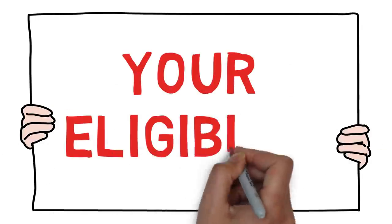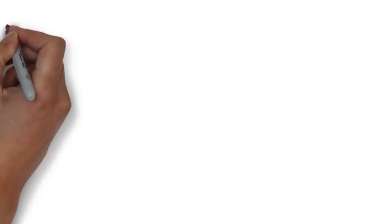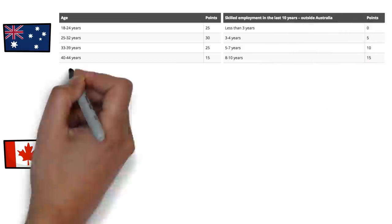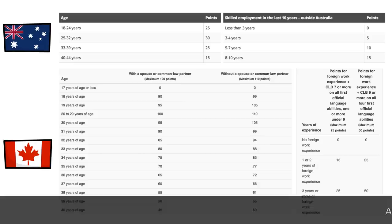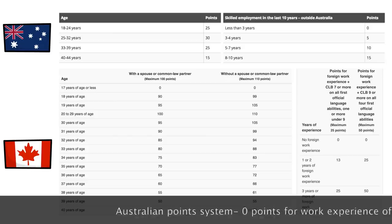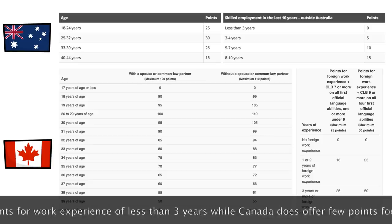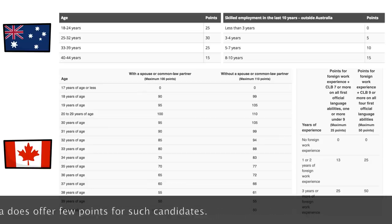Both countries have very similar eligibility criteria based on factors like age, skilled employment, work experience, and educational qualifications. Someone with 8 to 10 years of experience or more gets 15 points in Australia, whereas anyone with more than three years of experience gets the same points in Canada. So if you're 35 years old, you'll actually get more points in Australia, increasing your eligibility chances.